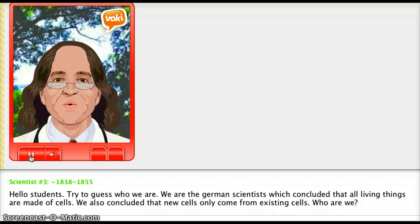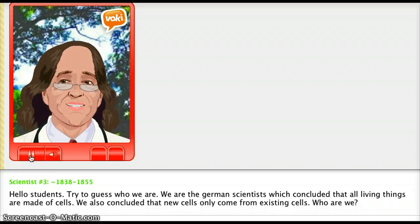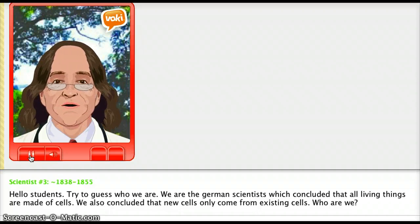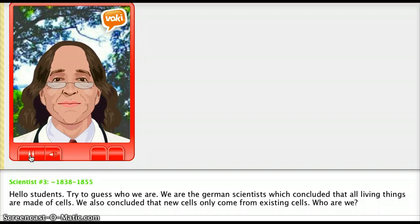Hello students. Try to guess who we are. We are the German scientists who concluded that all living things are made of cells. We also concluded that new cells only come from existing cells. Who are we?